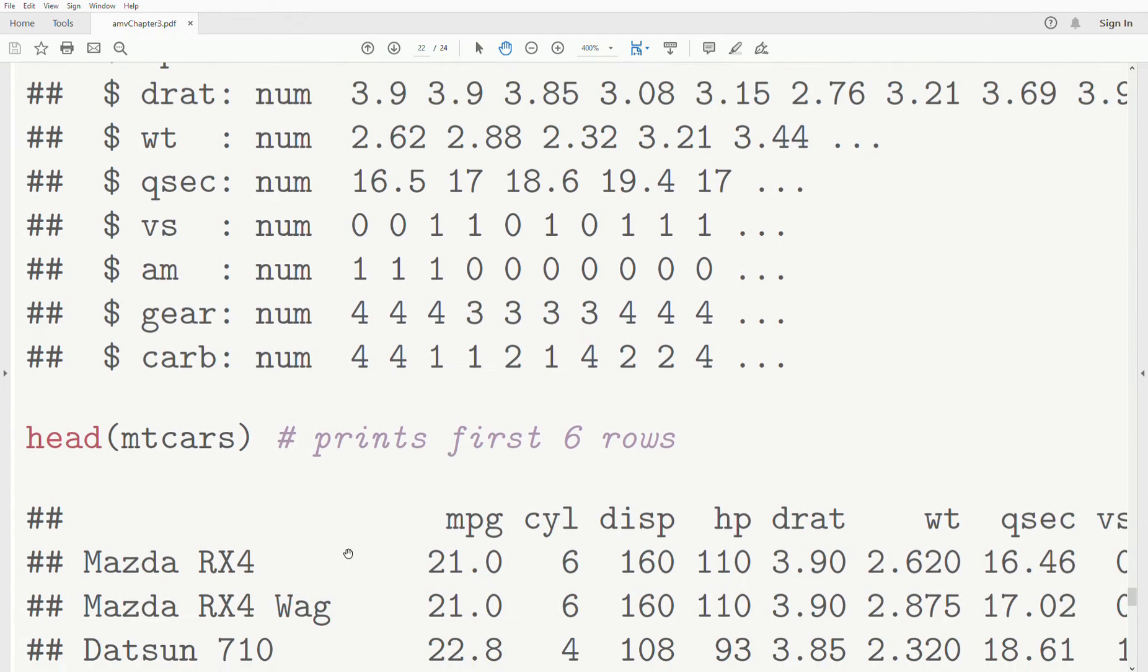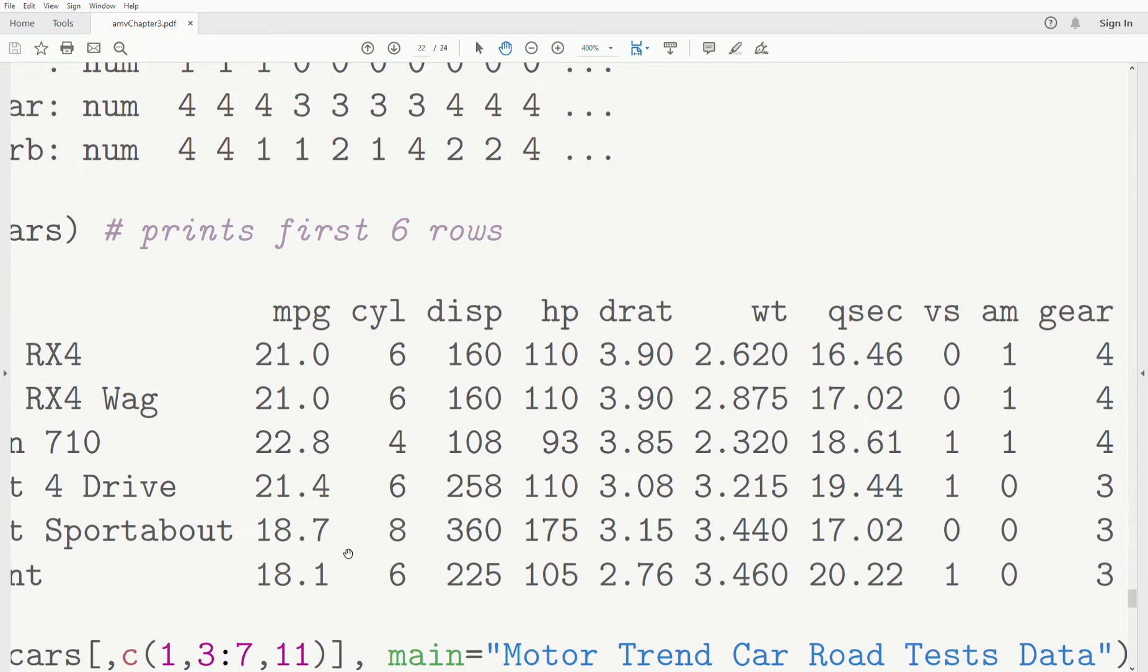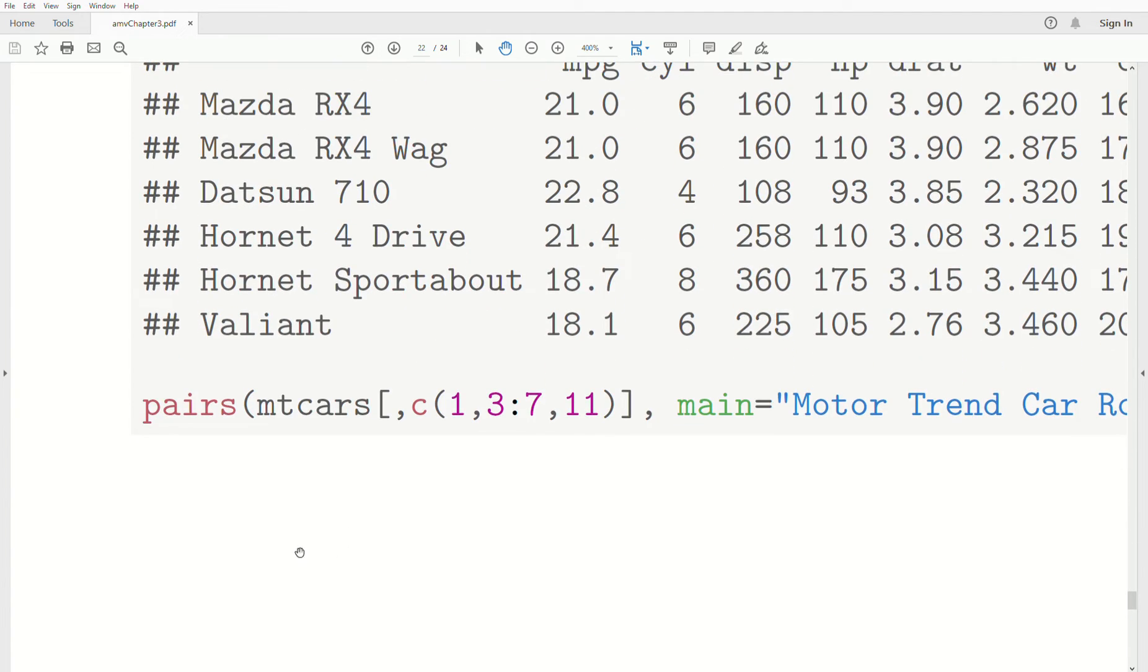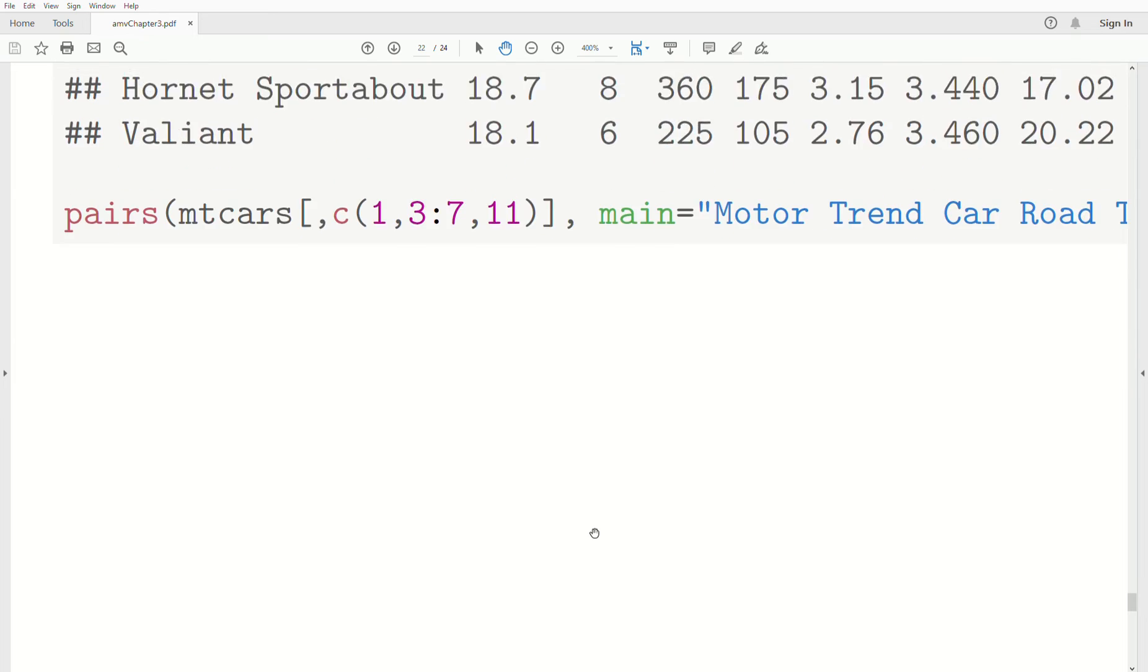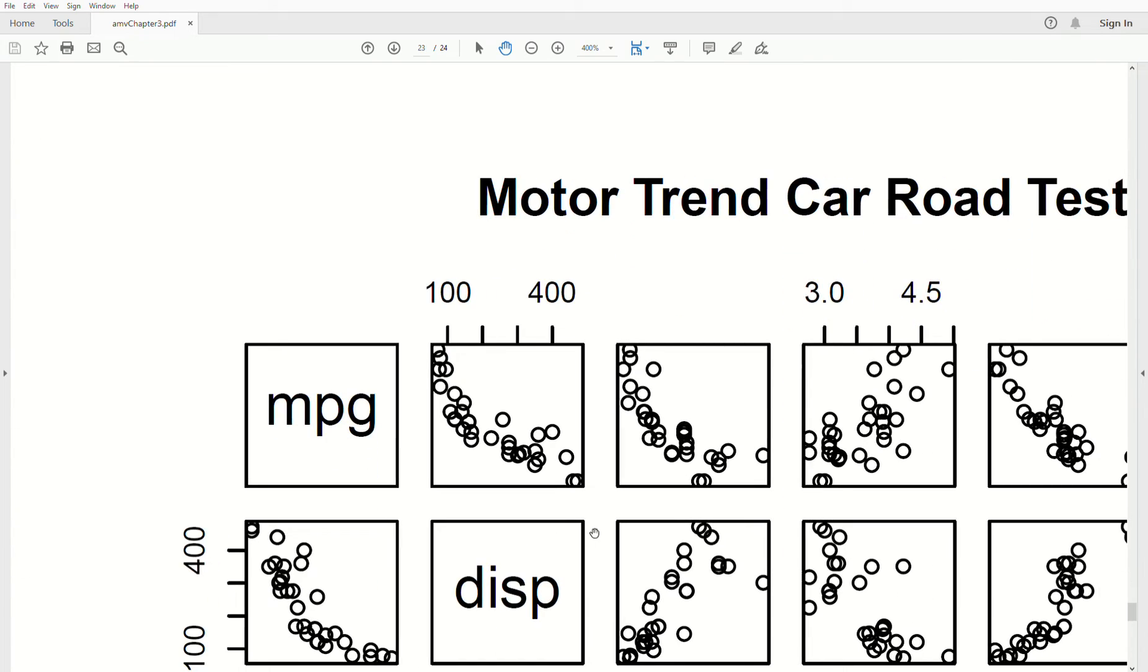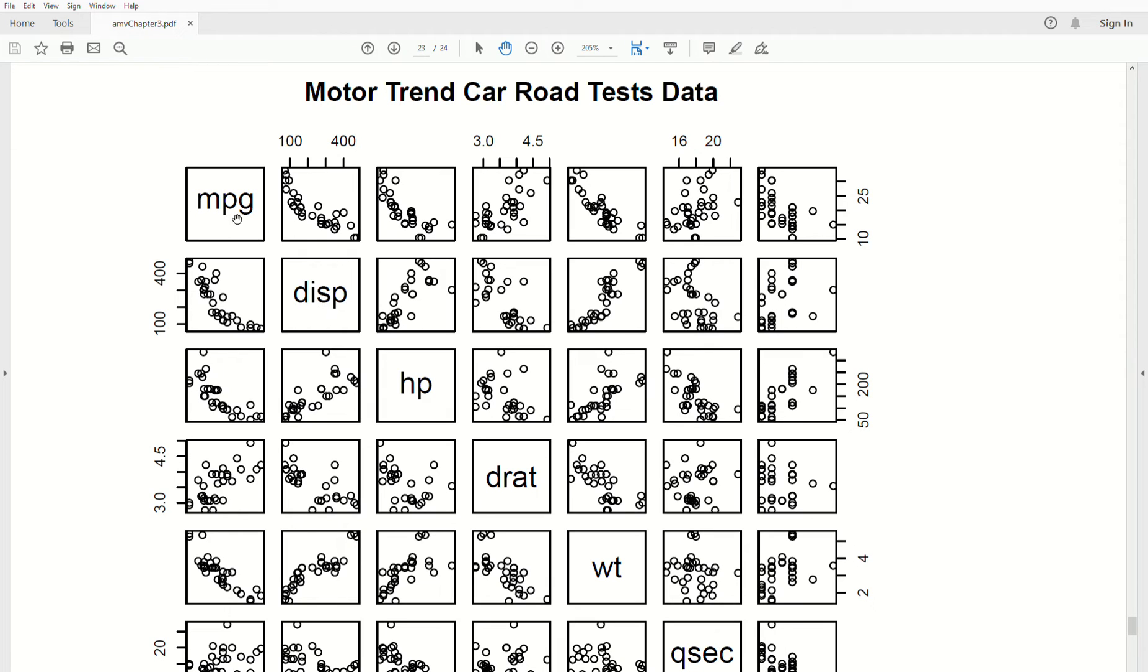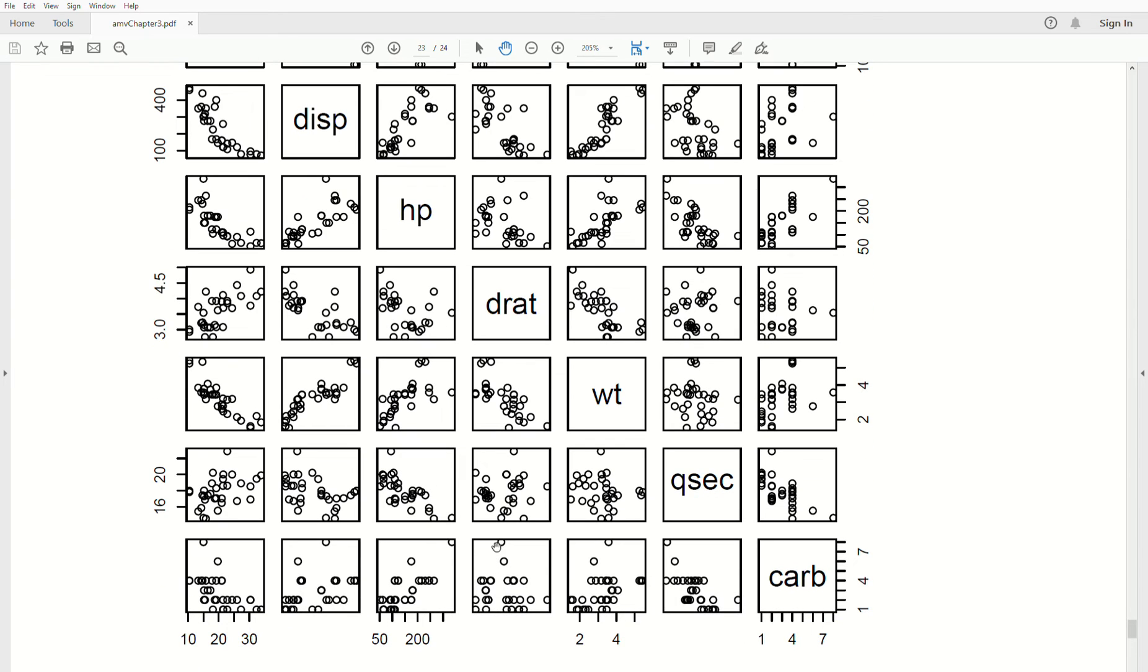The head function lists the first six rows of whatever you're printing. So this is some of the actual data values. The pairs command, I only grab columns 1, 3 through 7, and 11 because they're more continuous-like than the other variables. Here is a plot of the pairs. What it does is it provides a pairwise plot between the variables. So displacement and miles per gallon, you can see that it's negatively correlated. Horsepower and displacement, there's positive. Weight and displacement, you can get a quick overview of the pairwise relationships between each of these variables.